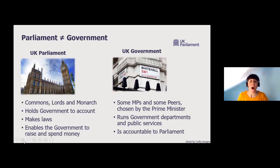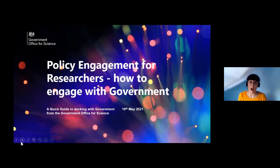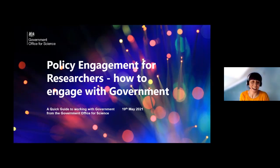The people we're going to be hearing from today are working within those government services and government departments. Government is lots of many different parts, and what we wanted to do today is give you an insight into three different parts of government, how they work with experts and how you can be involved. I'm really pleased to introduce Julia Coccato, Head of Science Capability, Advice and Leadership at the Government Office for Science, and Catherine Leach, a Policy Advisor in Academic Engagement at the Government Office for Science.